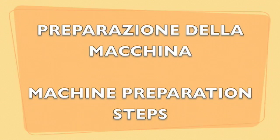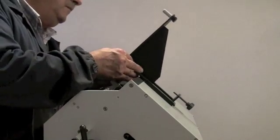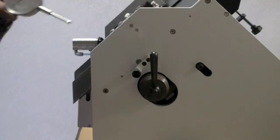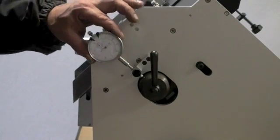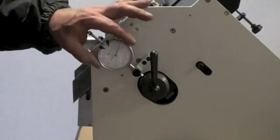To set up the machine, introduce the stick holder from the machine upper side. Set the dial gauge located on the right side of the machine on zero, turning the outer ring of the same gauge.